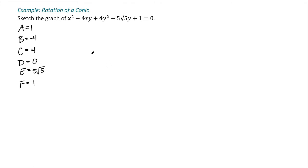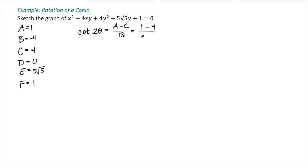Now I'll find the angle of rotation and the new coefficients A prime, C prime, D prime, E prime, and F prime. For the angle of rotation, the relationship is cotangent of 2θ equals A minus C over B. A is 1, C is 4, and B is negative 4, so this gives me negative 3 over negative 4, or 3 fourths.